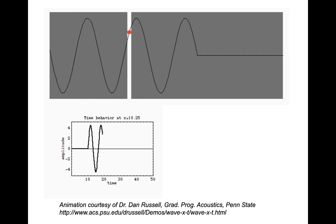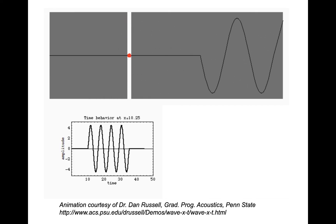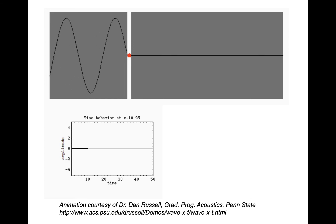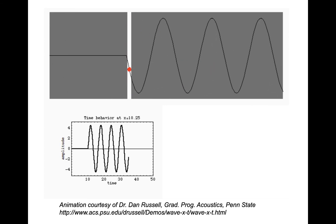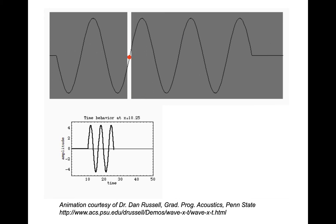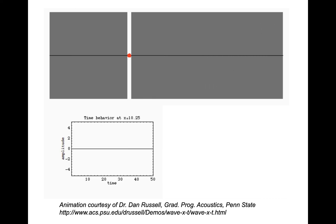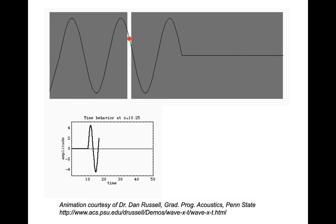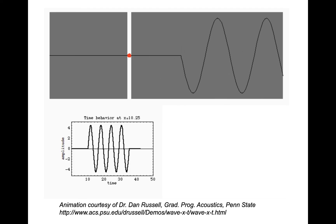So when the wave comes through, the dot first goes up and then down, up, down — and that's what gets plotted: the behavior of the dot moving up and down versus what the wave looks like at some instant in time.